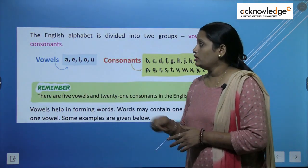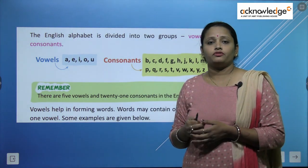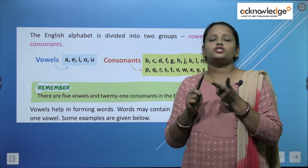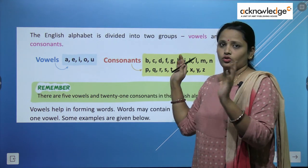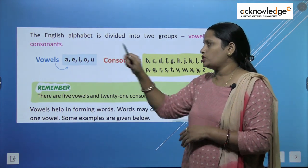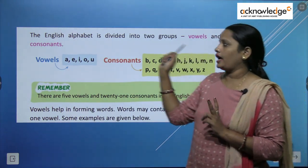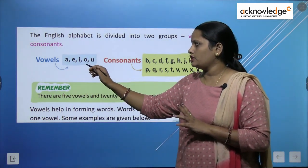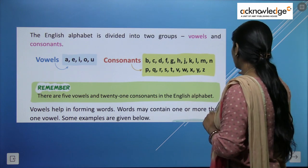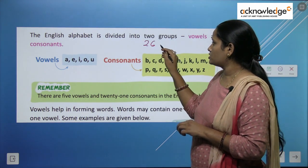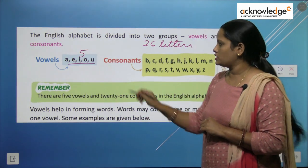The English alphabet is divided into 2 groups: vowels and consonants. In our previous chapter we learned about capital letters, small letters, and alphabetical order. We know that these letters together combine to make the alphabet. So the English alphabet is divided into 2 groups — vowels and consonants. From the 26 letters of the English alphabet, there are total 5 vowels and 21 consonants.